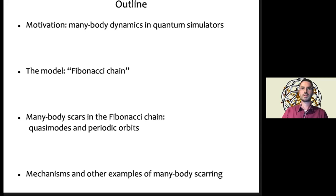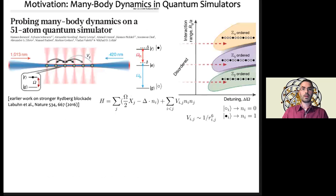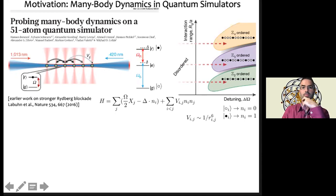The motivation is recent experiments on many-body dynamics in quantum simulators — in particular, the experiment probing many-body dynamics in a 51-Rydberg-atom quantum simulator. This experiment used a system of Rydberg atoms, developing technology to manipulate them and assemble long chains. Using optical tweezers they were able to prepare a very long chain of 51 Rydberg atoms.